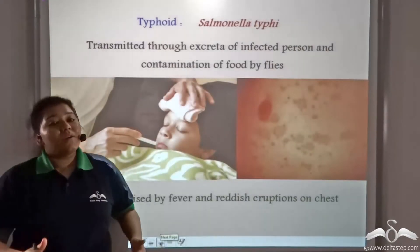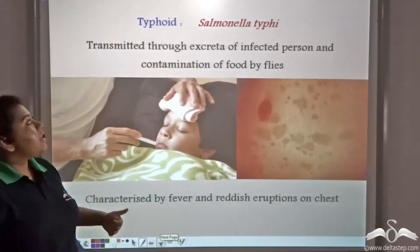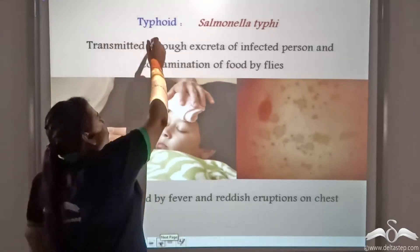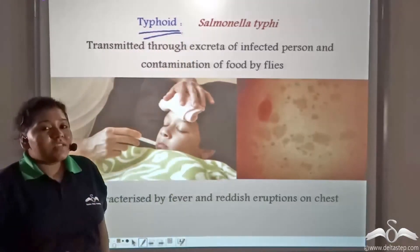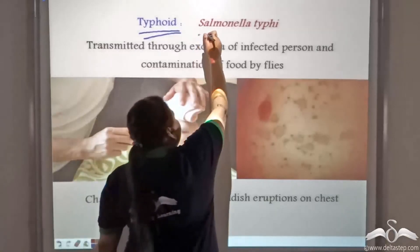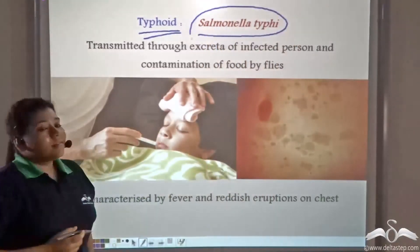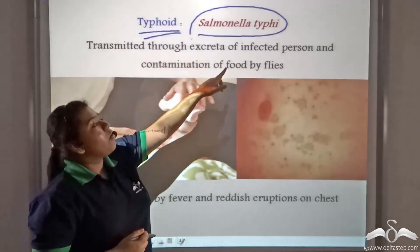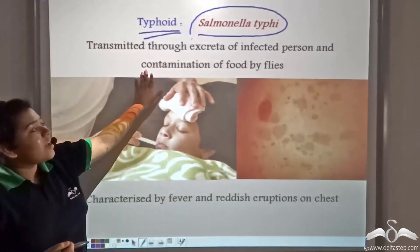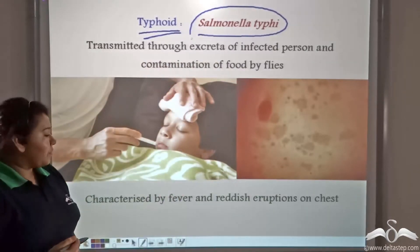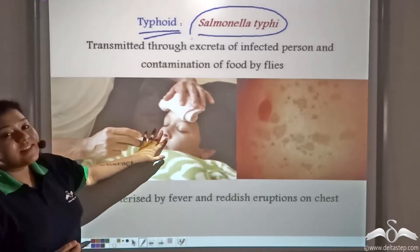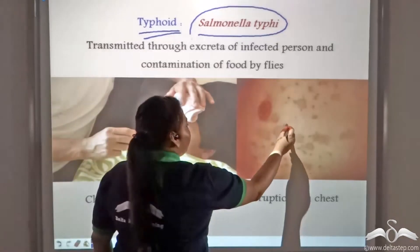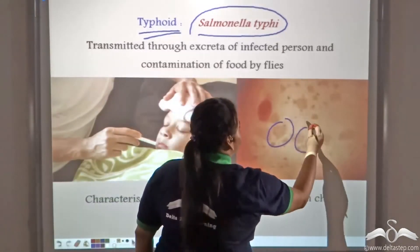Waterborne bacteria can also cause another disease known as typhoid, caused by the bacteria Salmonella typhi. This disease is transmitted through the excreta of an infected person and contamination of food by flies. The characteristics of this disease are extreme fever and the appearance of reddish eruptions on the chest.